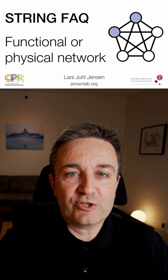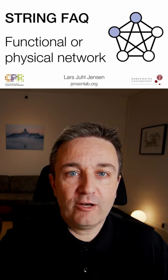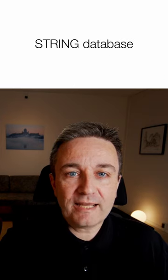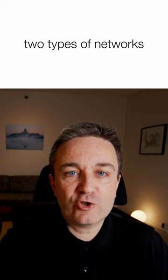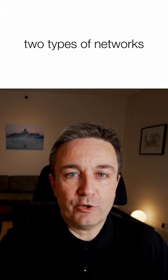Frequently asked question: functional or physical network? The STRING database provides two types of networks. One is made up of functional associations, the other physical interactions.